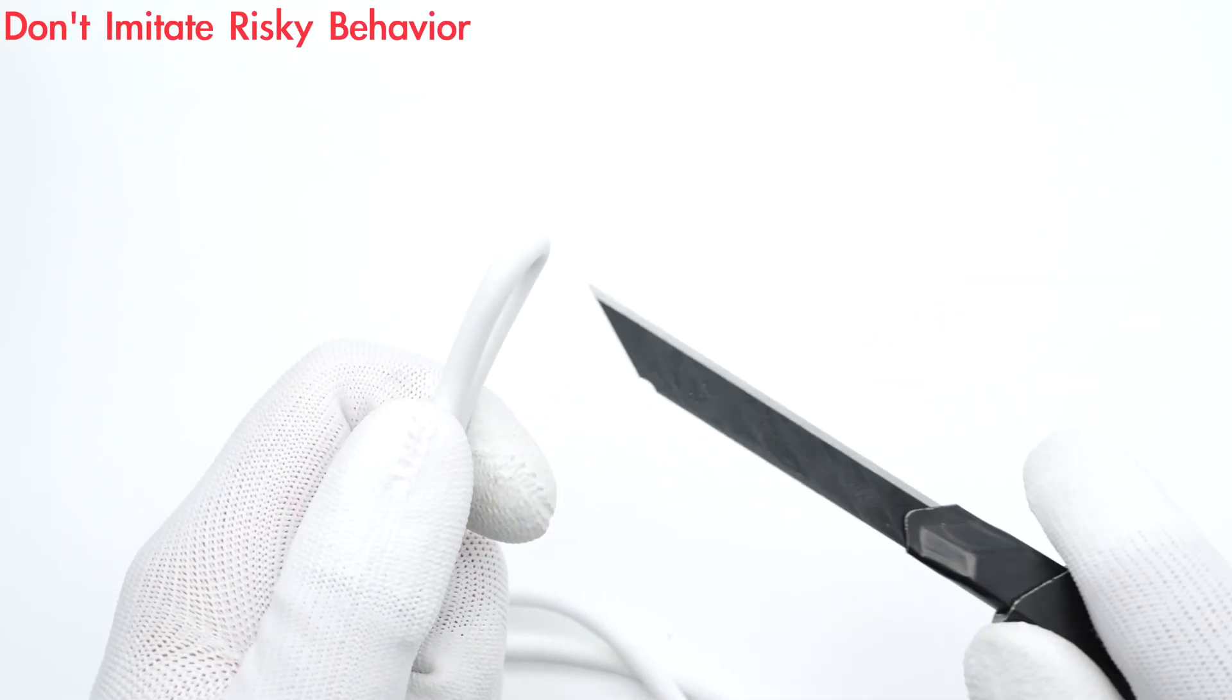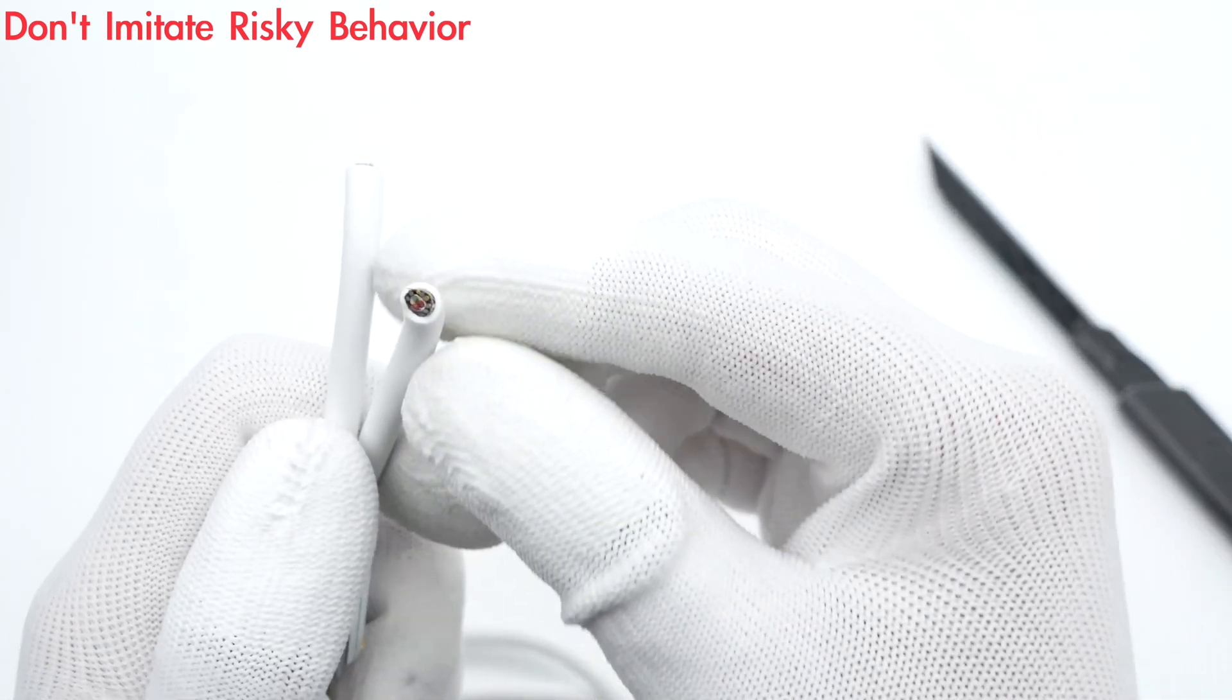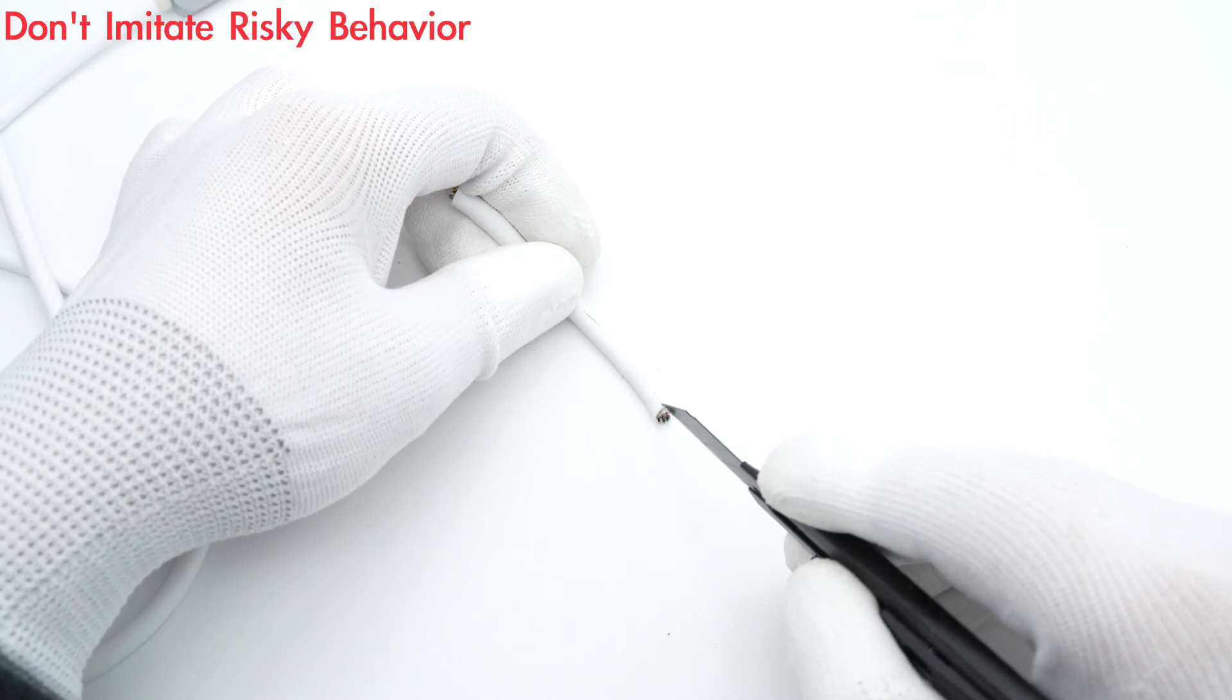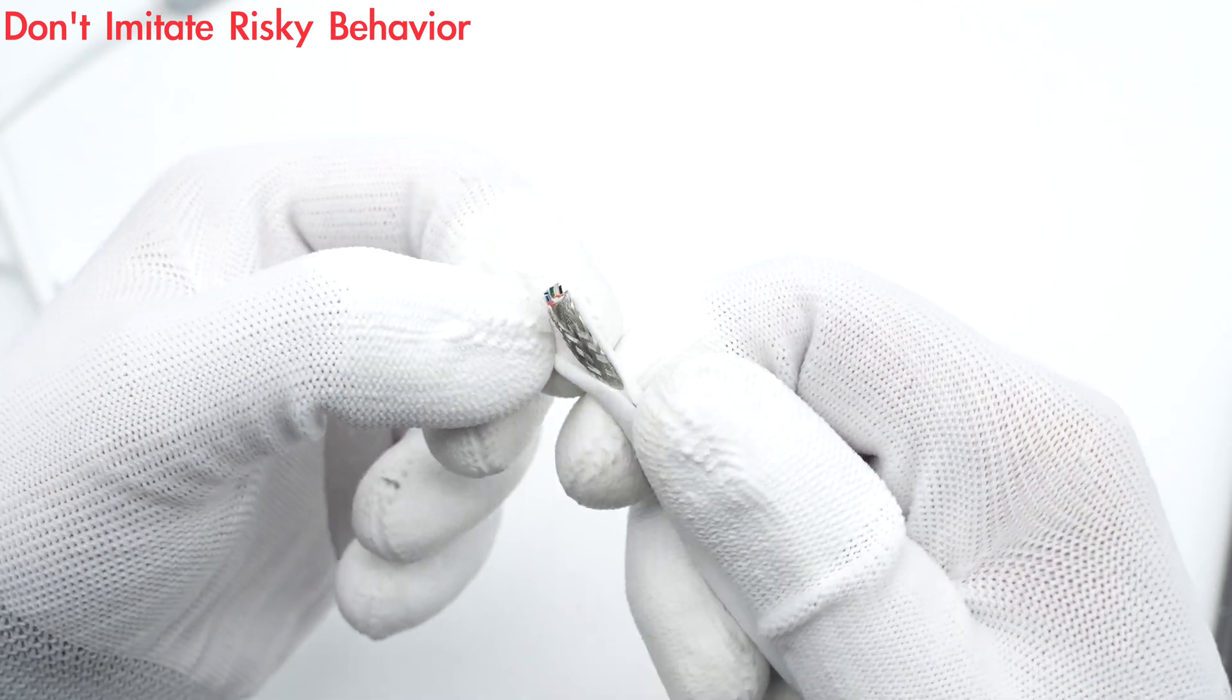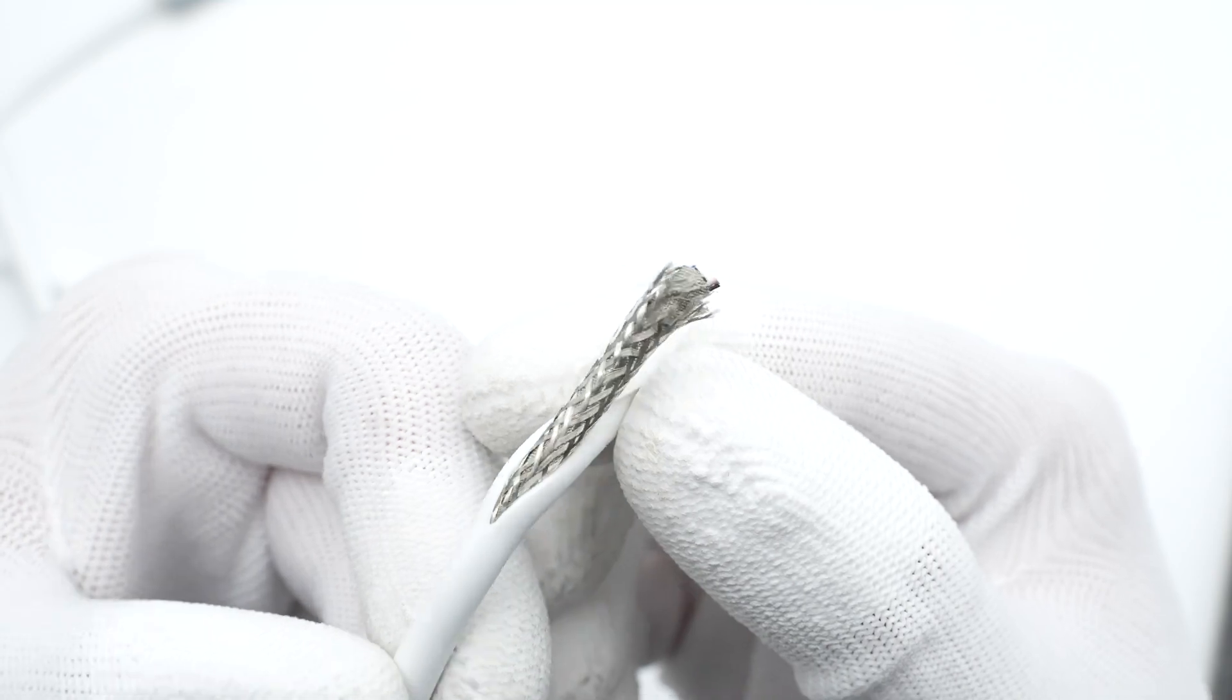First, let's cut off the cable and remove the outer rubber layer. There is a layer of braided shielding mesh inside.